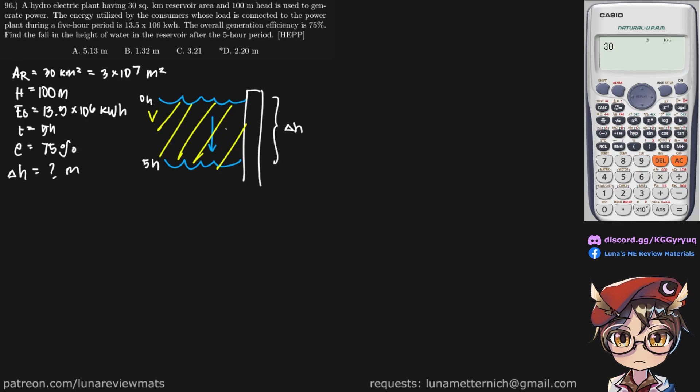So using common sense, V is equal to area of the reservoir times whatever delta H is. So this is what we're trying to find.